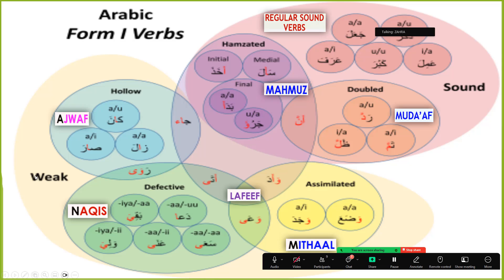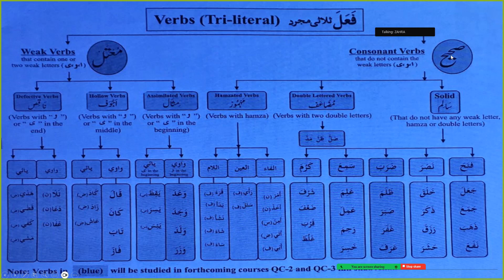To summarize: tri-literal verbs are divided into as-saheha (sound) and al-mu'tal (weak). Sound verbs include salim (e.g., fataha, nasara, daraba, sami'a, karuma), muda'af (e.g., madda yamuddu), and mahmuz (e.g., amara, qara'a, sa'ala). Weak verbs follow the pattern M-A-N: mithal, ajwaf, naqis, and also lafif. Mithal has the weak letter at the fa kalima; ajwaf at the ayn kalima; naqis at the laam kalima.